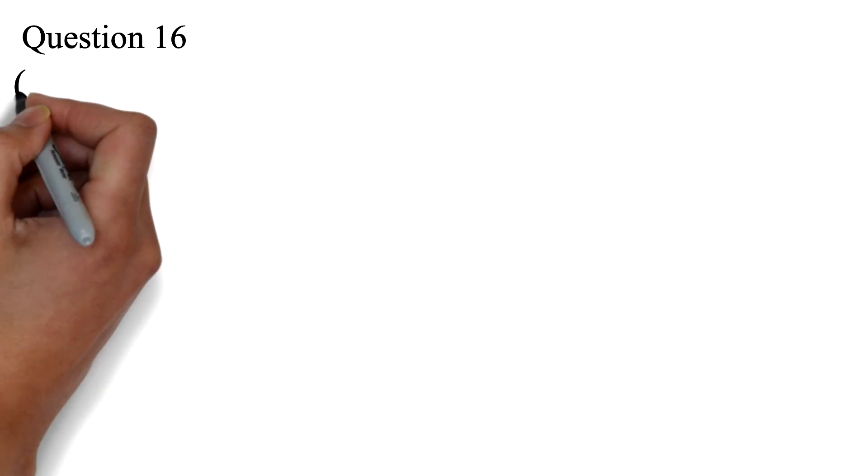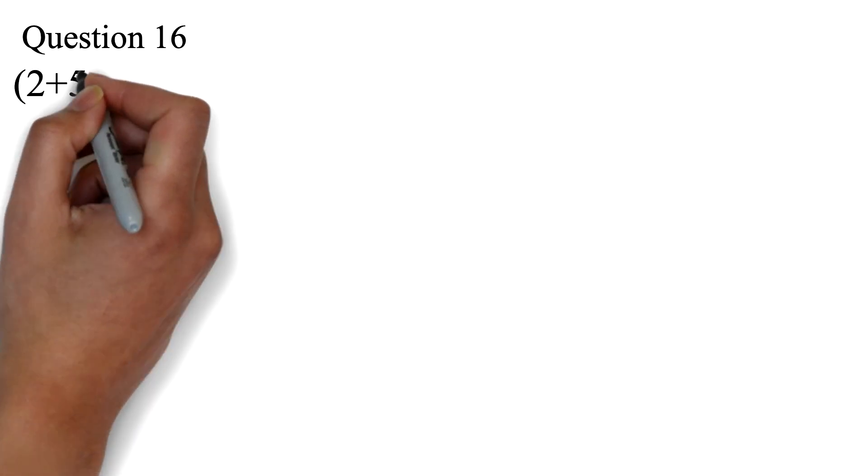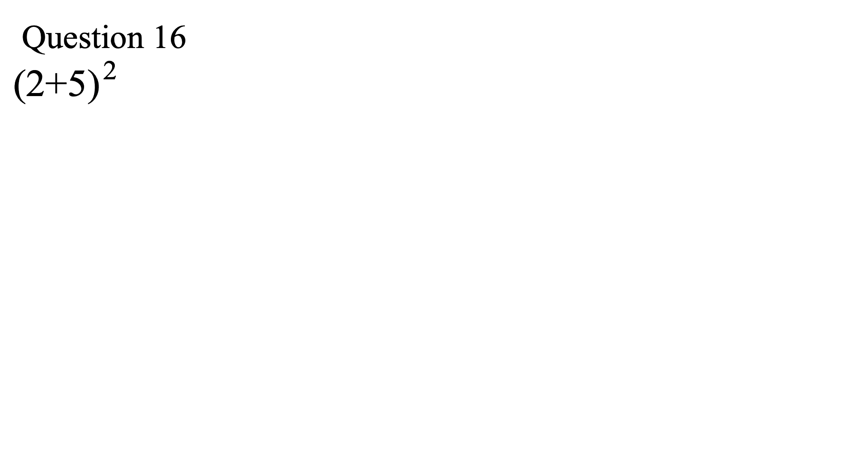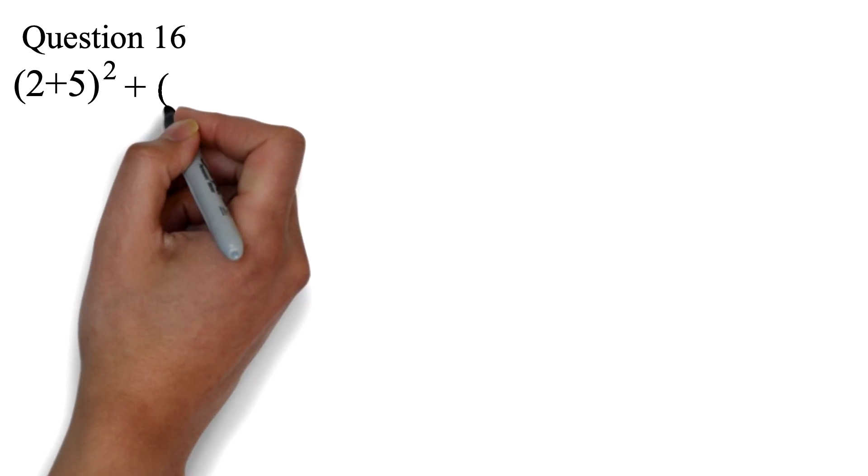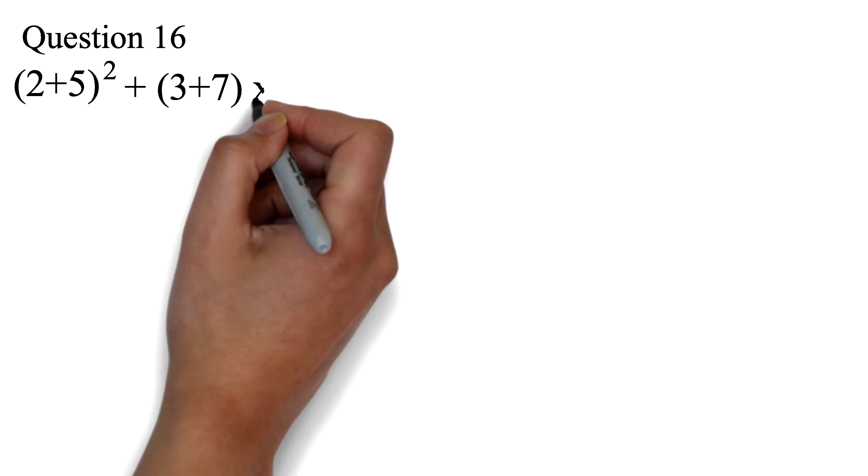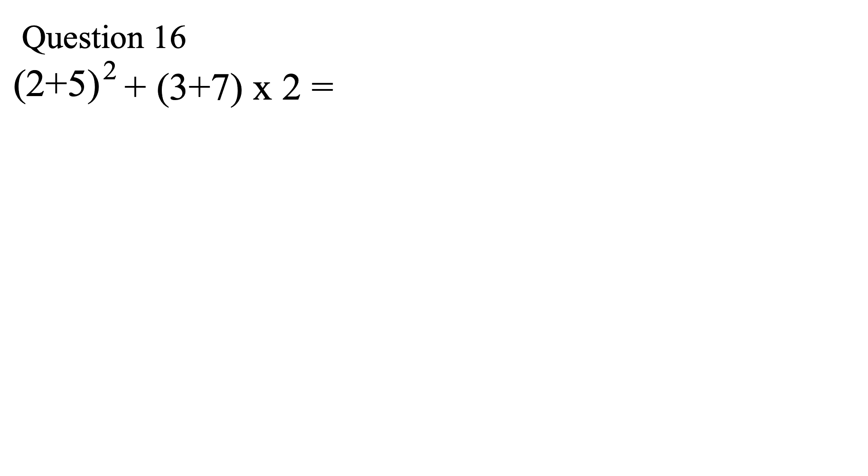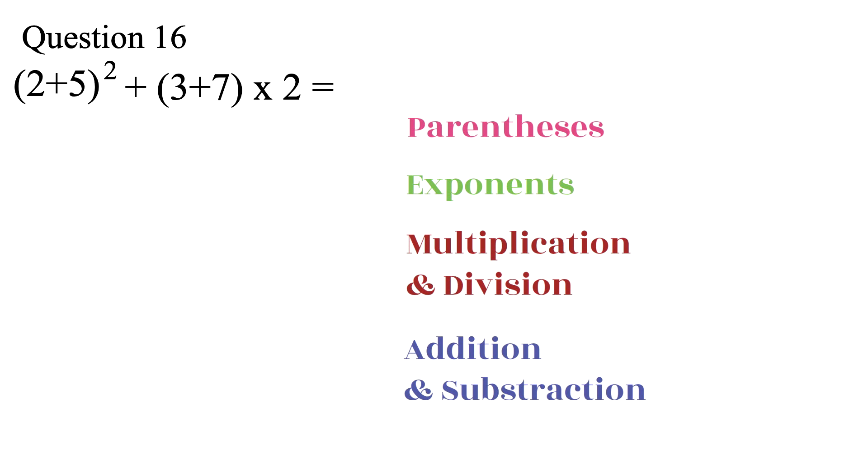Question 16. We are supposed to calculate this without using a calculator. Parentheses, 2 plus 5, squared, plus, parentheses, 3 plus 7, times 2, equals. You can pause and try it.